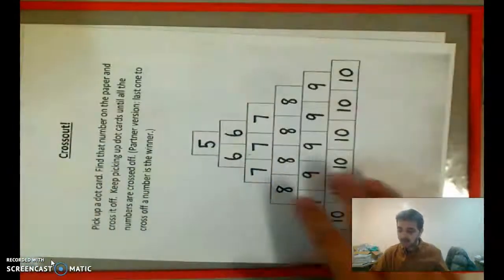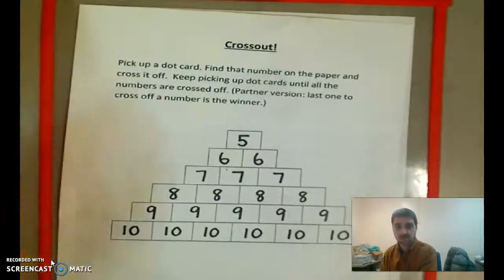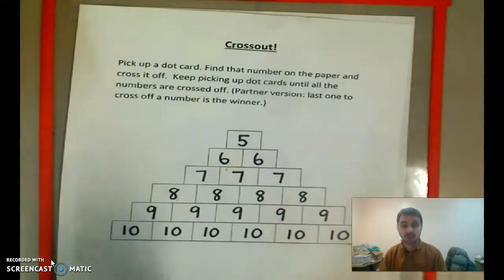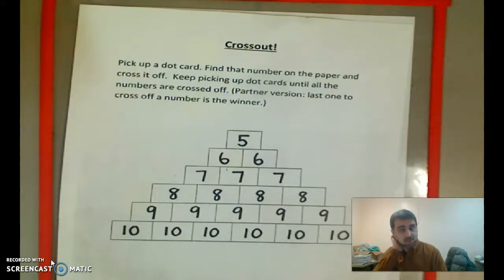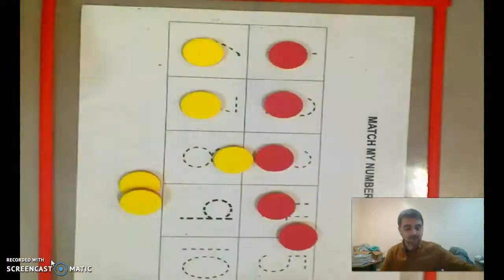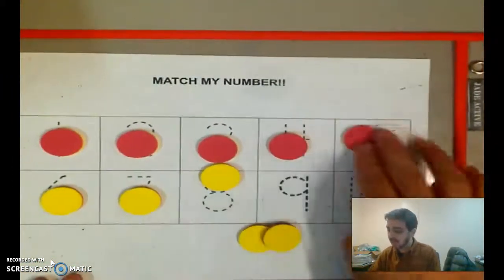Or you could play Crossout, all right? So the same thing. You just need your dot cards. You do need the five dot cards, right? Because you've got a five there. And your eraser and marker. And we've played that before. I showed you how to play that. I think that was Tuesday.